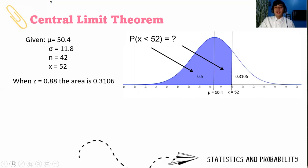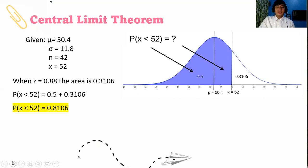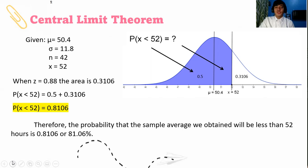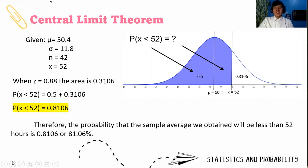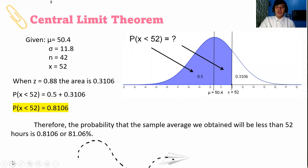Notice that in the distribution, 0.5 is already shaded, so we have to perform the process of addition. That is 0.5 plus 0.3106. So the probability that x̄ is less than 52 is 0.8106. Therefore, the probability that the sample average we obtain will be less than 52 hours of watching television is 0.8106 or 81.06%.